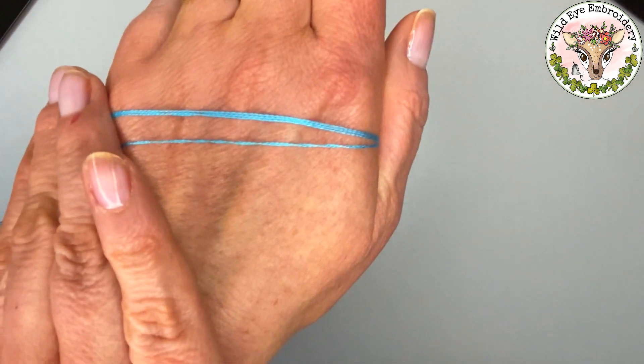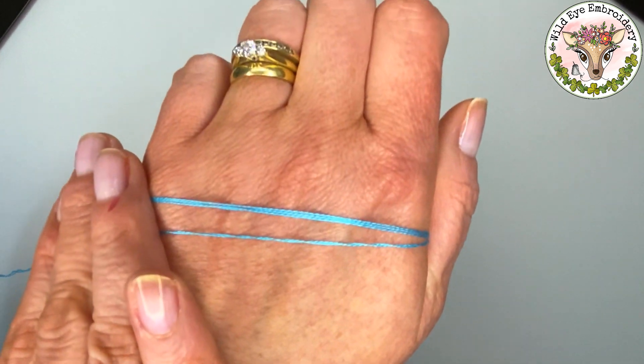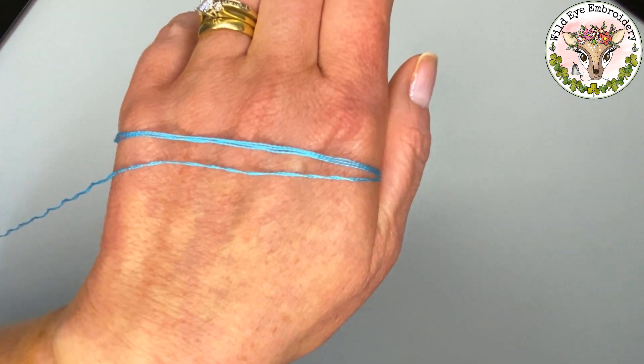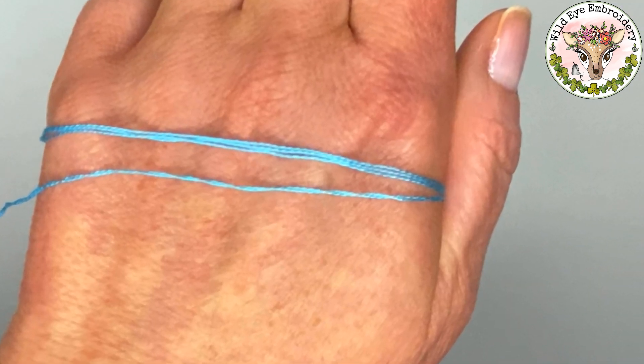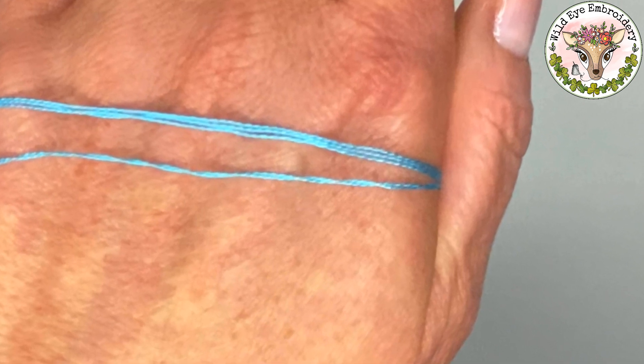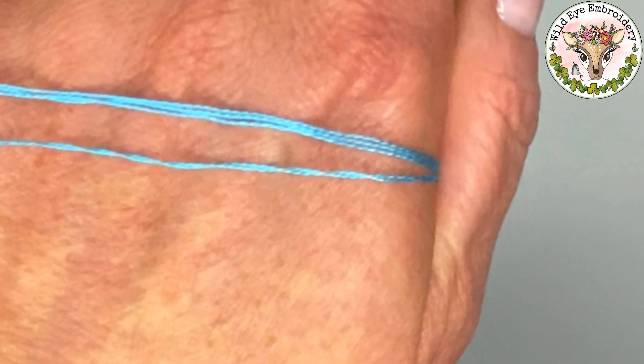The bottom strand of floss is the strand that I did the wrong way. Can you see it's twisted almost like a rope? That will affect your stitches. They're never going to lie flat and they're not going to look as smooth as the top one. So that is exactly why you don't do it that way.